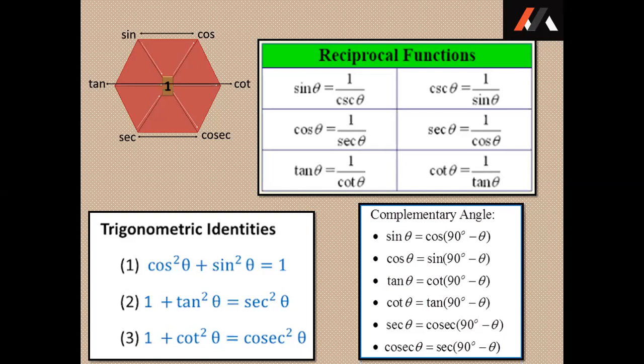Now let us go to the complementary angles. The double-headed arrow denotes the complementary angles. The complementary pairs are sin and cos, tan and cot, sec and cosec. Because sin and cos are complementary angles, sin theta is equal to cos of 90 minus theta; cos theta is equal to sin of 90 minus theta. Similarly, tan theta is equal to cot of 90 minus theta; cot theta is equal to tan of 90 minus theta. Sec theta is equal to cosec of 90 minus theta; and cosec theta is equal to sec of 90 minus theta.